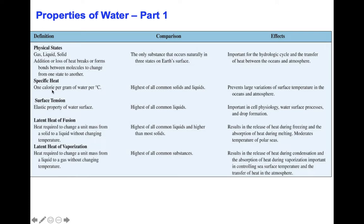The specific heat of water is one calorie per gram of water per degree Celsius — the highest of all common solids and liquids. Because of this specific heat capacity, the oceans buffer temperatures on the face of the Earth, preventing large changes of surface temperature in the oceans and atmosphere. So ocean water in equatorial regions is not boiling up. Water also has surface tension — a pretty high elastic property of water surface — the highest of all common liquids.